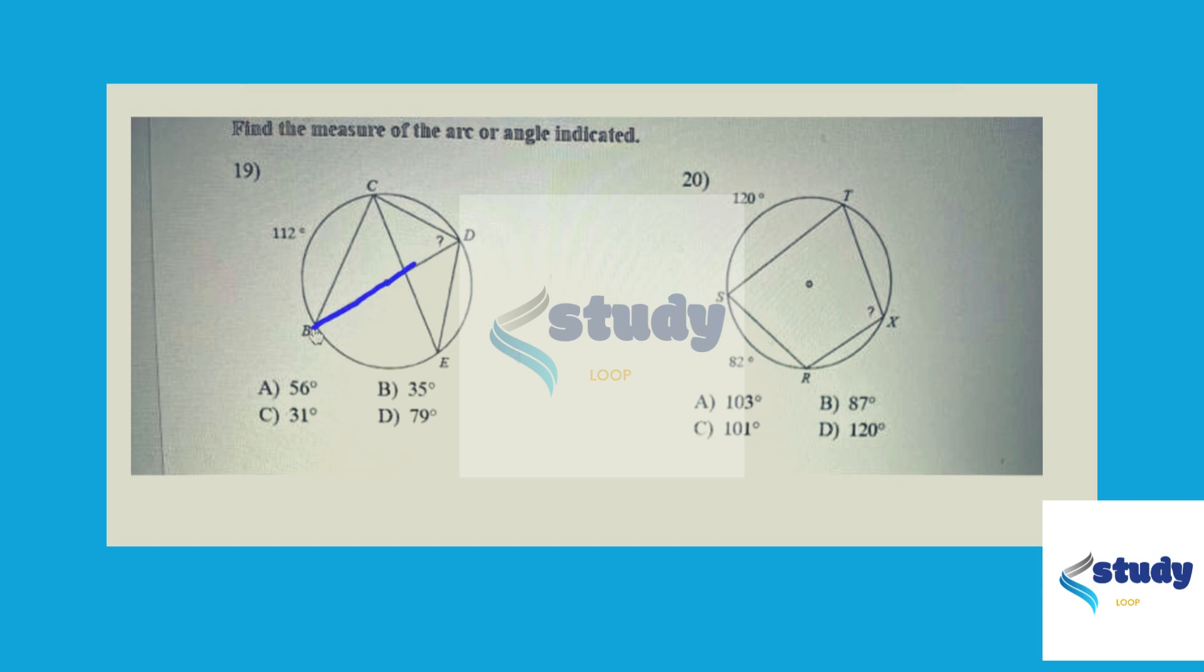Angle BDC opens up to what is called an intercepted arc of 112 degrees. The relationship when the angle's vertex, like it is here, is on the circle, is that it's half of the arc that it opens up to, and half of 112 is 56 degrees.